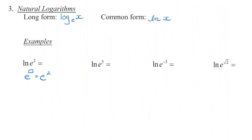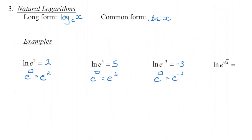In order for these two sides to be equal, the answer has to be 2. In the next one: what is the exponent on base e that gives us e to the power of 5? It's going to be 5. The third one: what is the exponent on base e that gives us e to the power of negative 3? That's negative 3. And the last one: what is the exponent we need on base e to get e to the power of the square root of 2? You can see it is going to be the square root of 2.